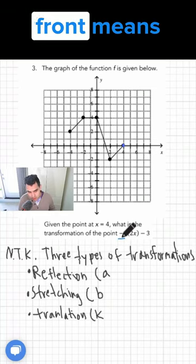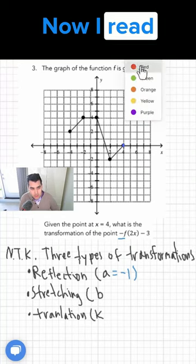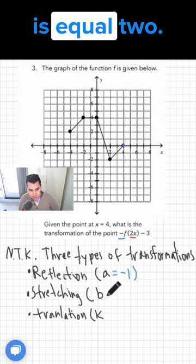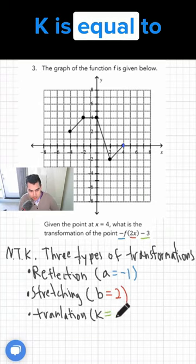This minus in front means a is equal to -1. Now I read 2x. That means b is equal to 2. I read minus 3. That means k is equal to -3.